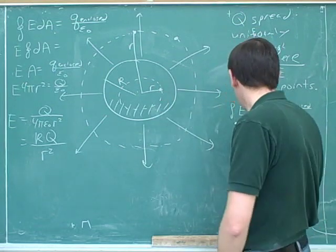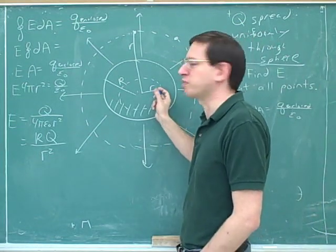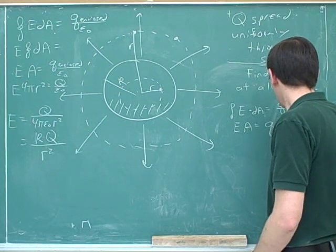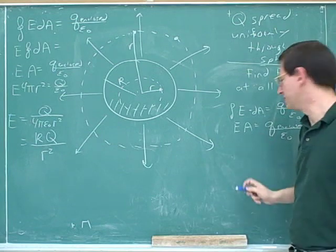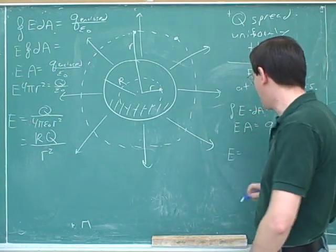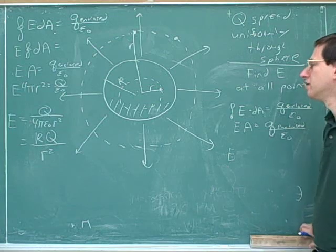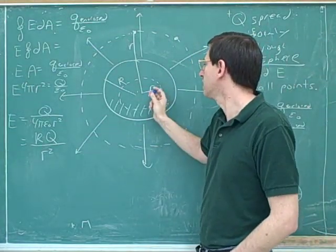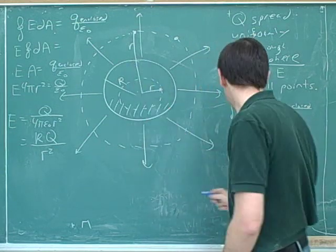Would you expect the electric field to be changing or constant along this inner sphere? It should still be constant, so we can still take E out of the formula, and it's still emerging perpendicular to the sphere. We get a formula that looks pretty similar. For capital A, that's four pi r squared — the same as before. We use lowercase r because we want the area of the Gaussian surface, not the whole ball of charge.